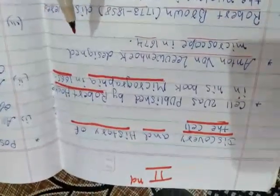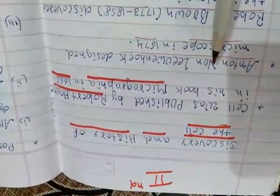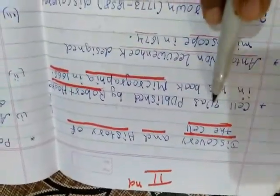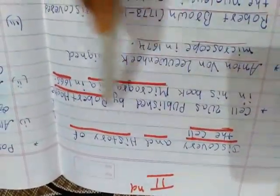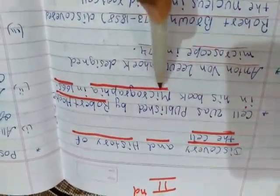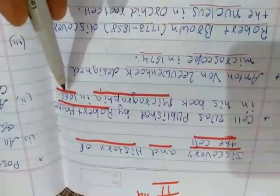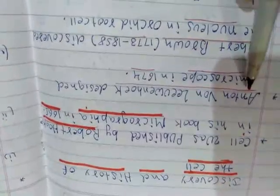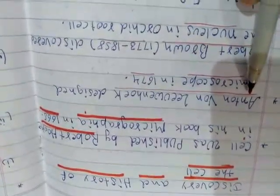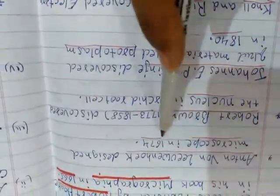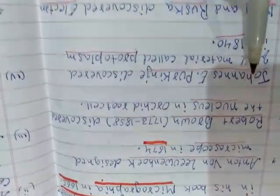Chapter 1. The cell was first described by Robert Hooke in his book Micrographia in 1665. Our second point is Antony van Leeuwenhoek designed the microscope in 1674.